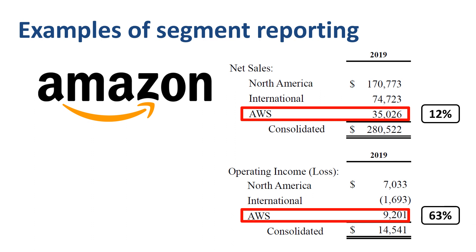Based on the relative profitability of the operating segments, you could argue that Amazon is primarily a high-margin cloud computing company, doing some low-margin retail on the side. Besides the revenue and operating income numbers, you can find information about segment assets, property and equipment, as well as depreciation and amortization by segment, in the Amazon annual report.